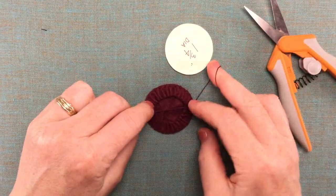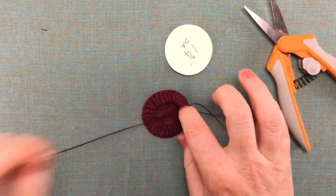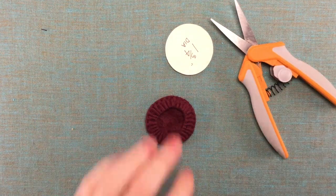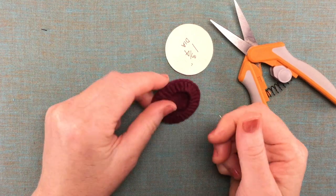So then you can just knot off your thread. This thread matches so beautifully to the felt that I'm not going to try to hide that knot. It's right under the edge and I don't think it's going to show up too much.